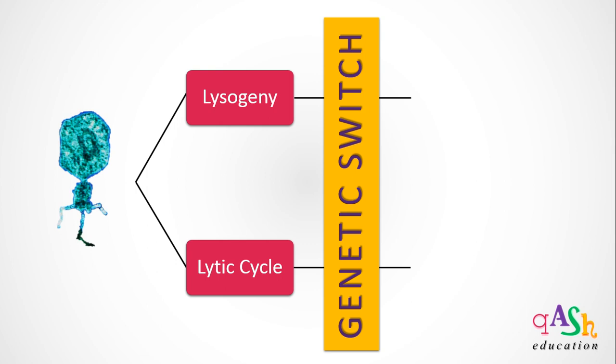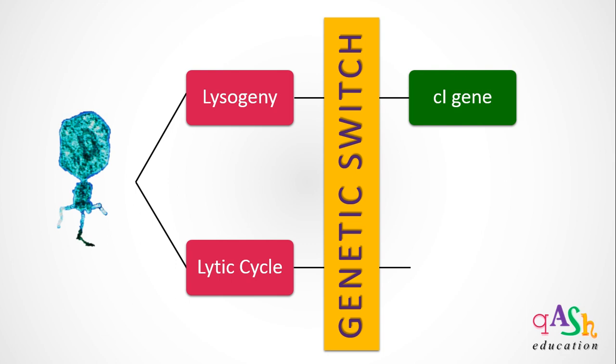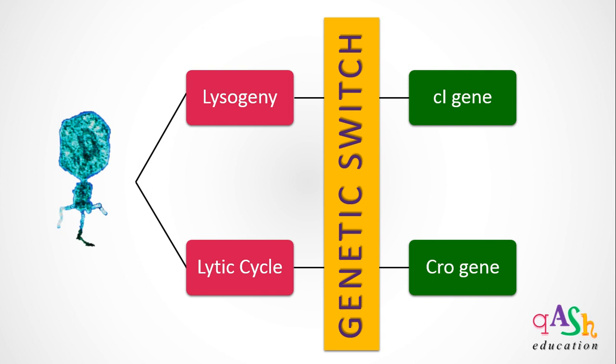The gene required for the establishment of the lysogeny cycle is the CI gene. The gene required for the establishment of the lytic cycle is the Cro gene.